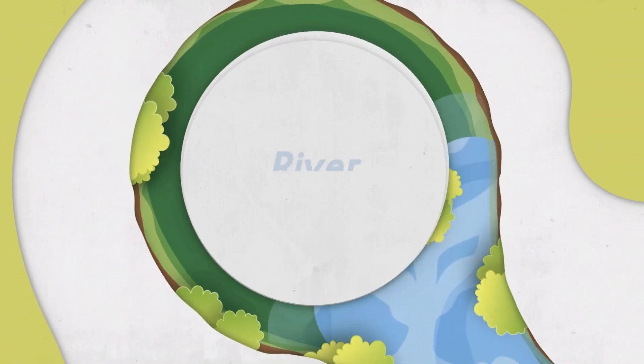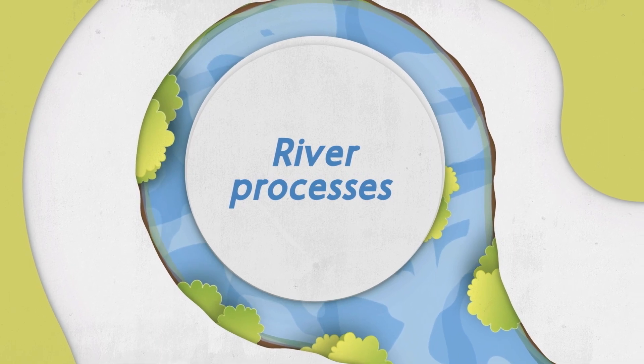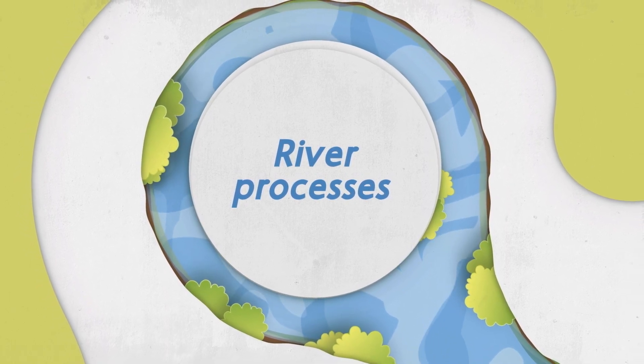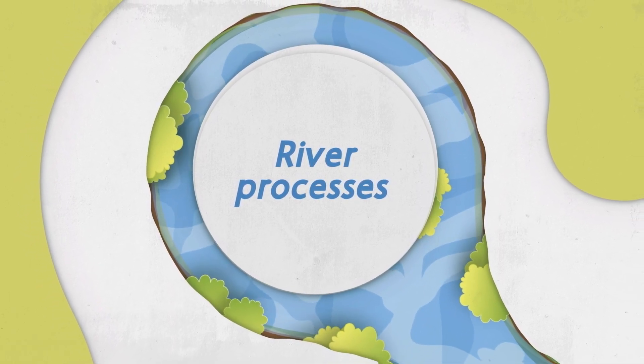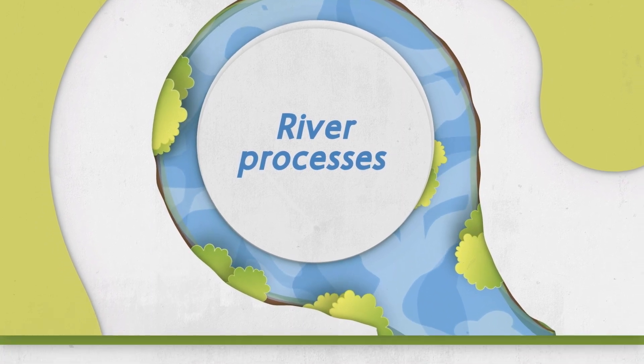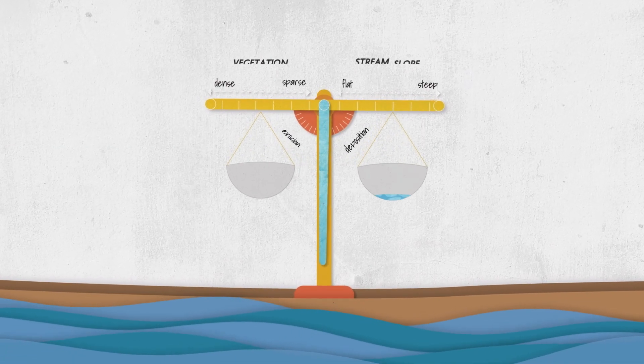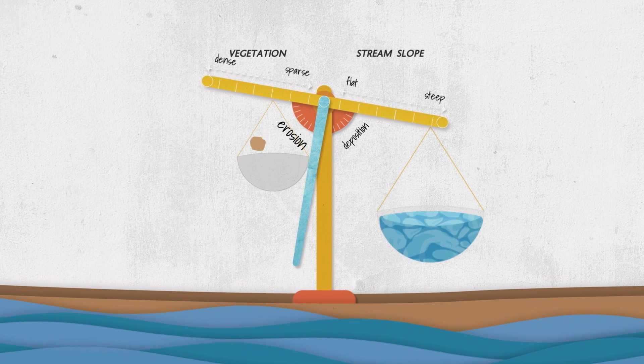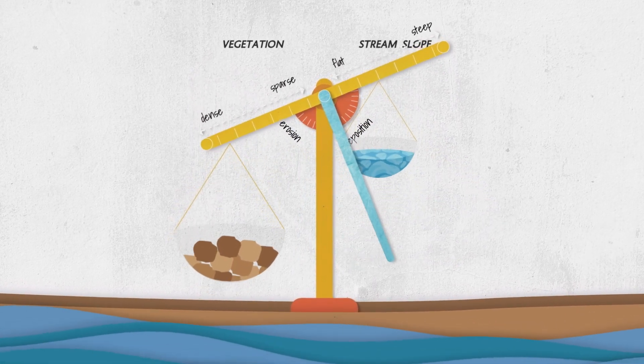To understand why and how alluvial rivers can erode and change their shape and form, we need to understand some river processes. Lane's balance diagram can help describe the balance between erosion and deposition within alluvial streams.